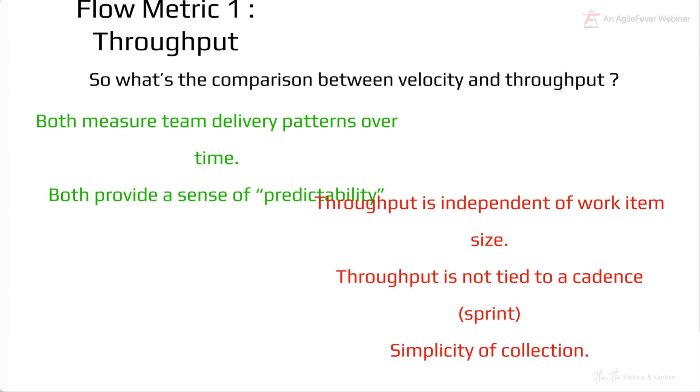Throughput is not tied to a cadence. So you're not doing it like at every sprint, every two sprints, every PI. And the fun fact is, it's very, very simple to collect. There is no complexity. You're just measuring how many work items are done. As simple as that.